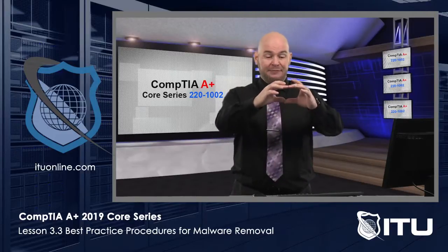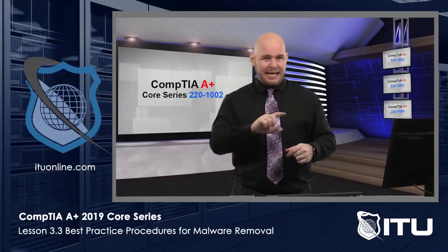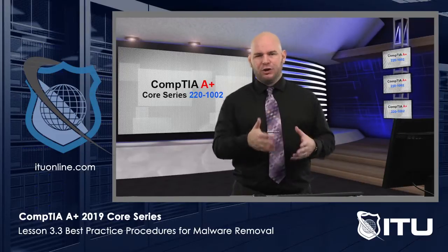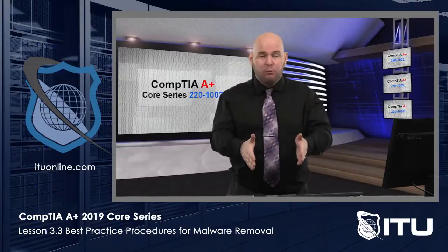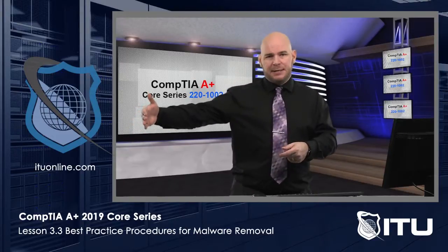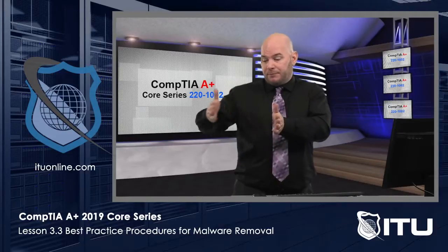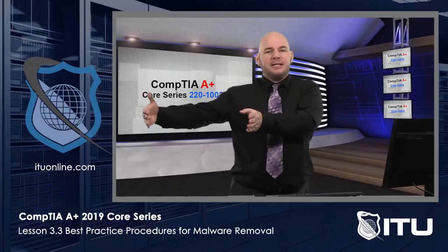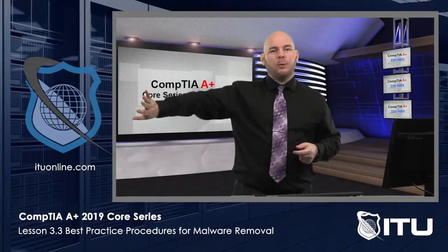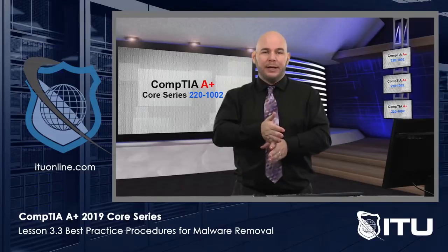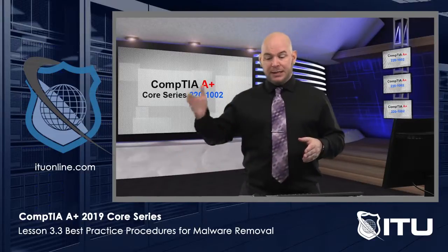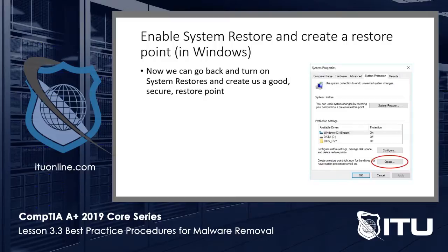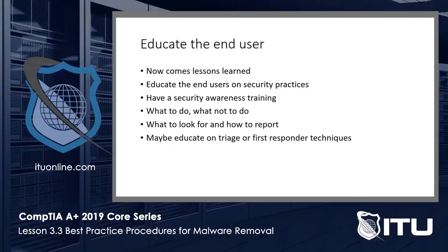At the very bottom of System Protection there's a Create button — click that to create a restore point and give it a name with a date and time stamp so you know when it was created. For example, if you create one now and get infected three days later, you can go back to that point — you'll lose those three days of data but you won't have the malware. Creating a restore point daily is like a system backup; it lets you return to that point in time.